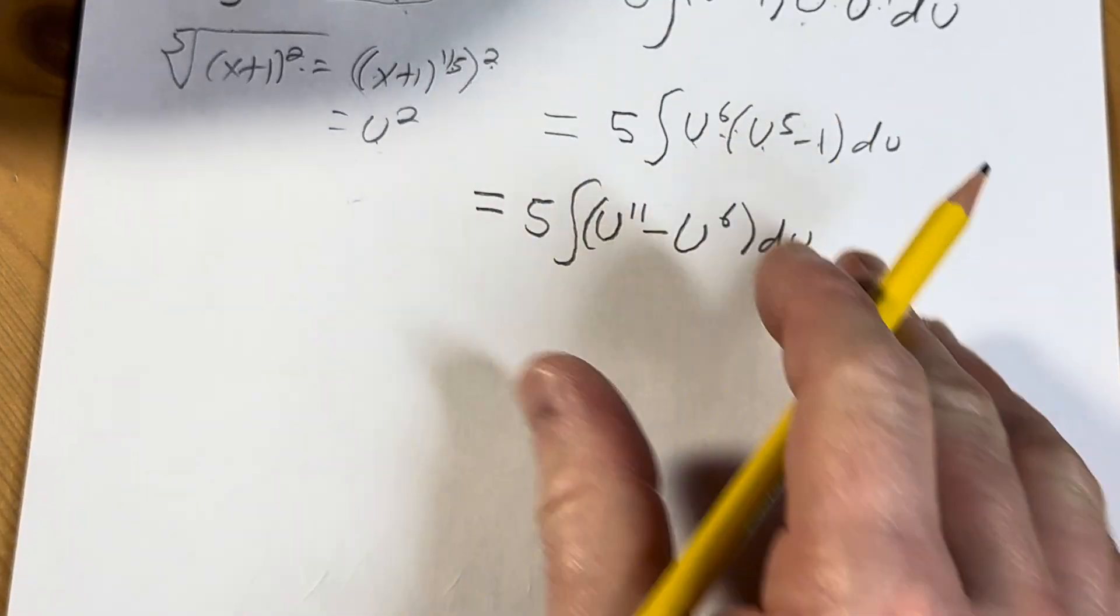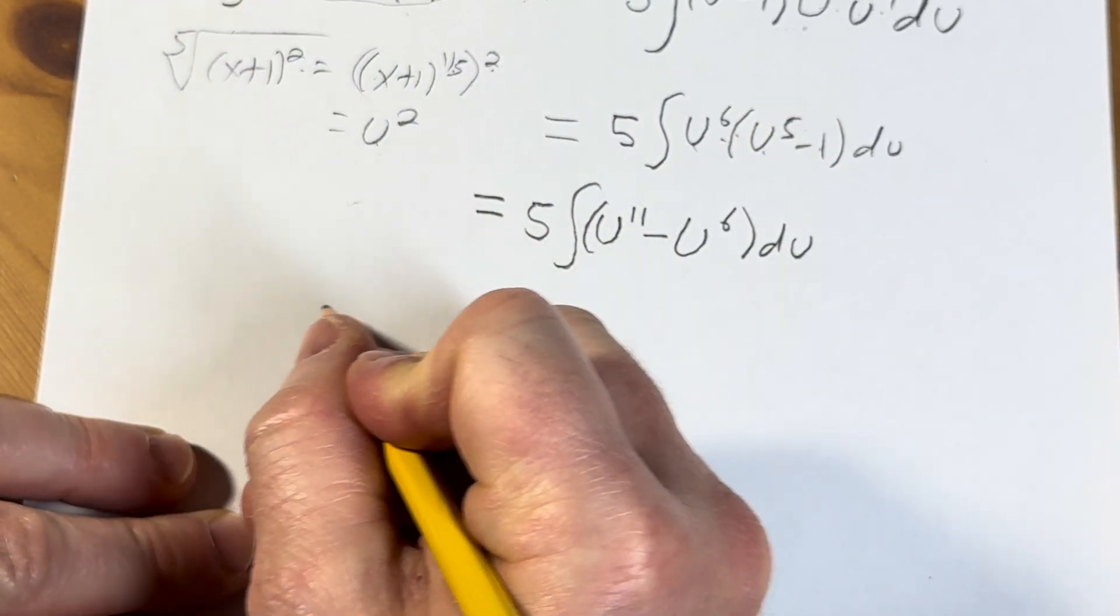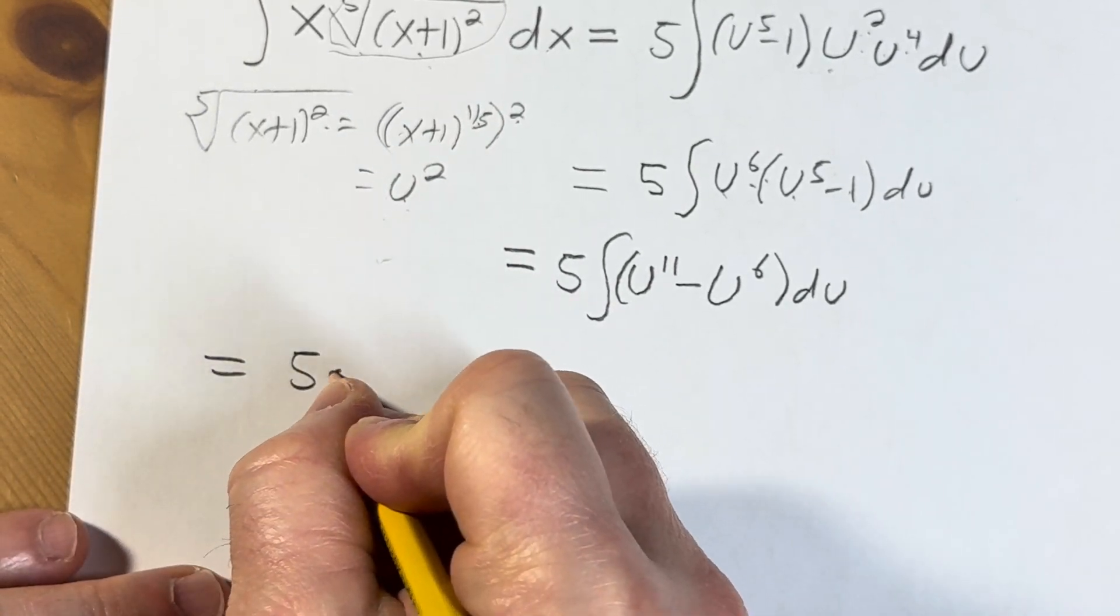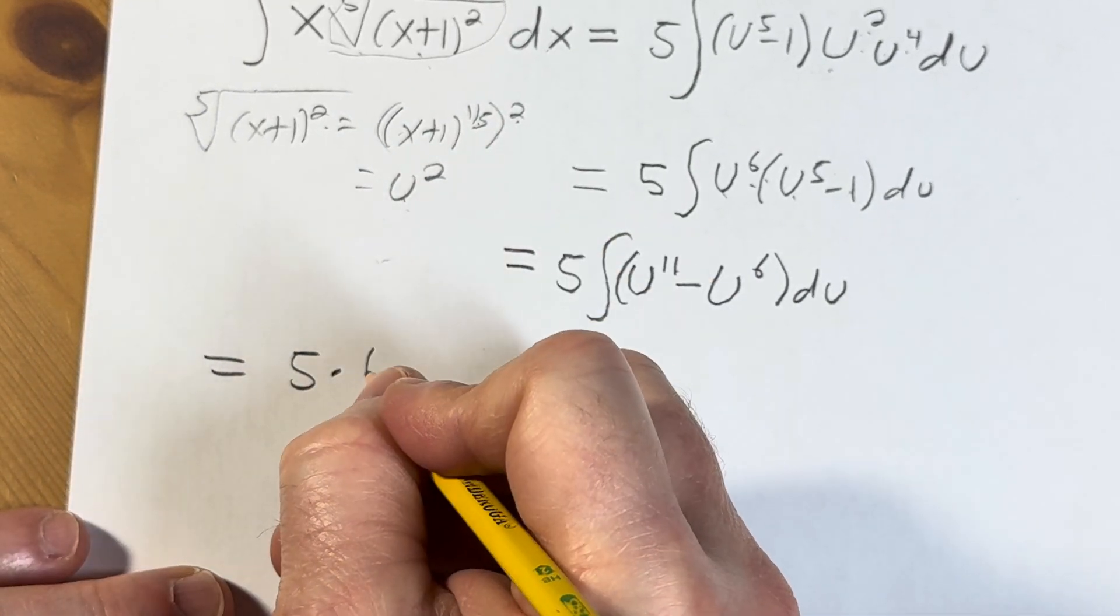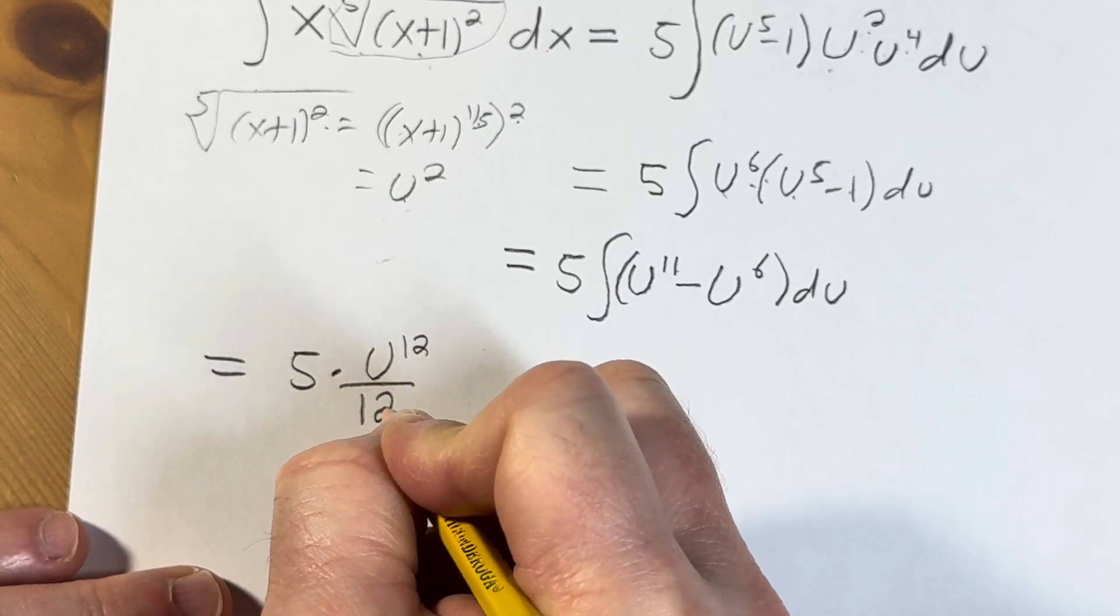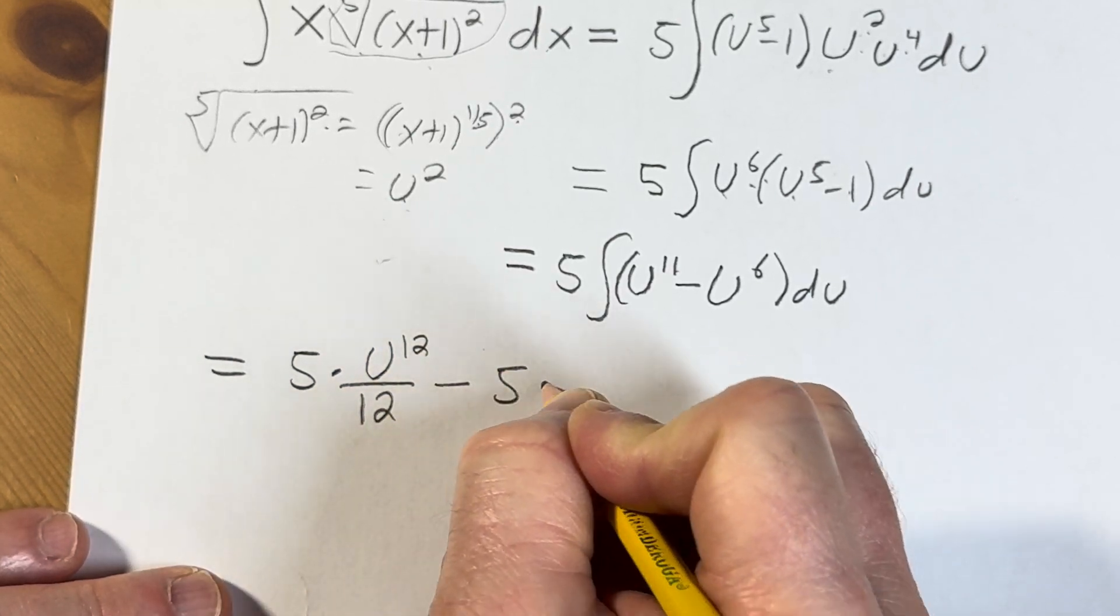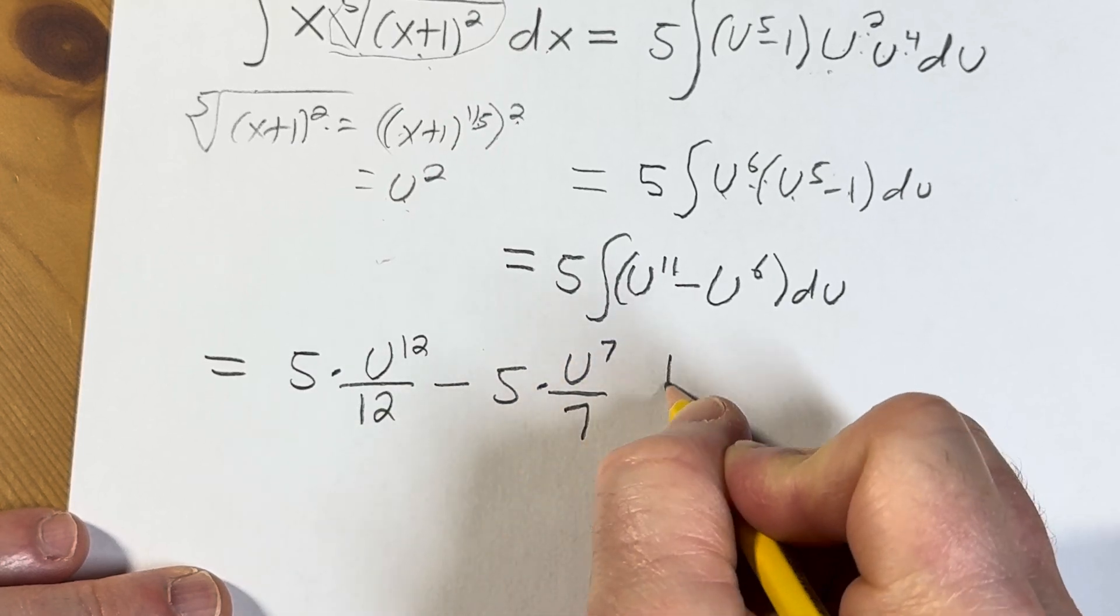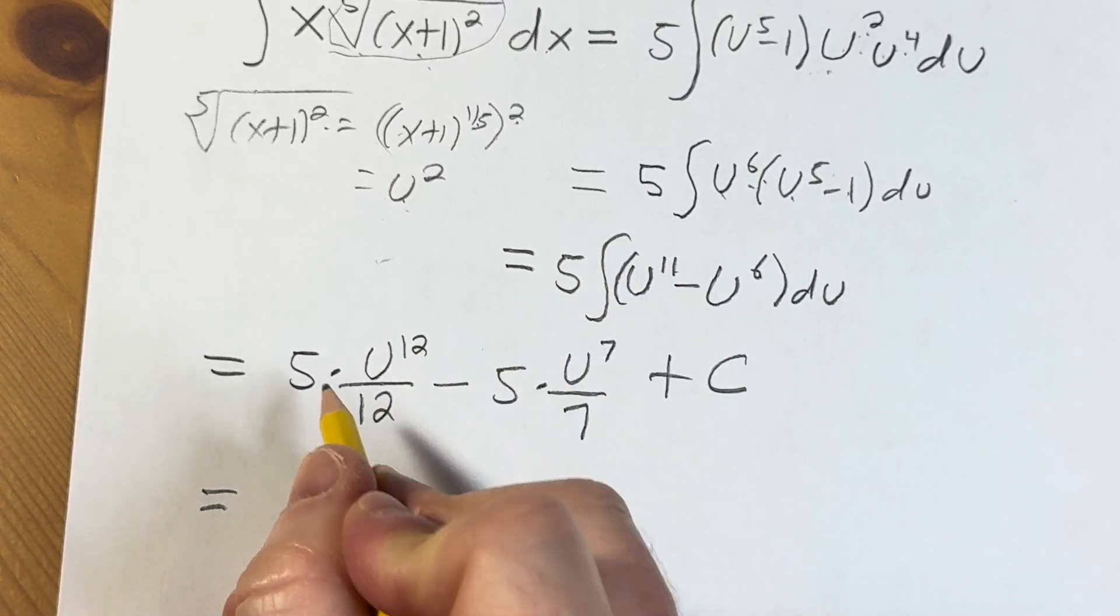Now we're ready to integrate using the power rule. So this is equal to, I'm going to come over here running out of room. So 5 times adding 1 and dividing by the result. So u to the 12 over 12 minus 5 times adding 1 and dividing by the result. u to the 7 over 7 plus c. This is equal to 5 twelfths.